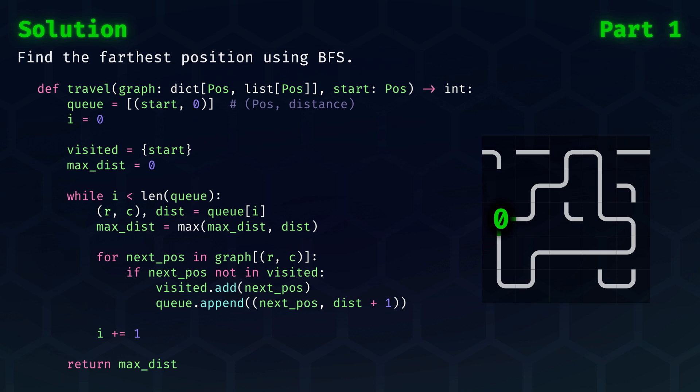While our index i is less than the length of the queue, we know there are more elements to process. So we'll take the next one from the queue, and we check its neighbors. If the neighbor has not been visited yet, we'll visit it and add it to the queue.